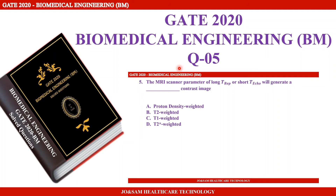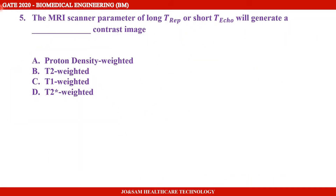Welcome to Joe and Sam Healthcare Technology. This is the GATE 2020 exam biomedical engineering paper, 5th question. The question asks: MRI parameter of long TR (repetition time) or short TE (echo time) will generate a what type of contrast image? The options are: A) proton density weighted, B) T2 weighted, C) T1 weighted, D) T2 star weighted.